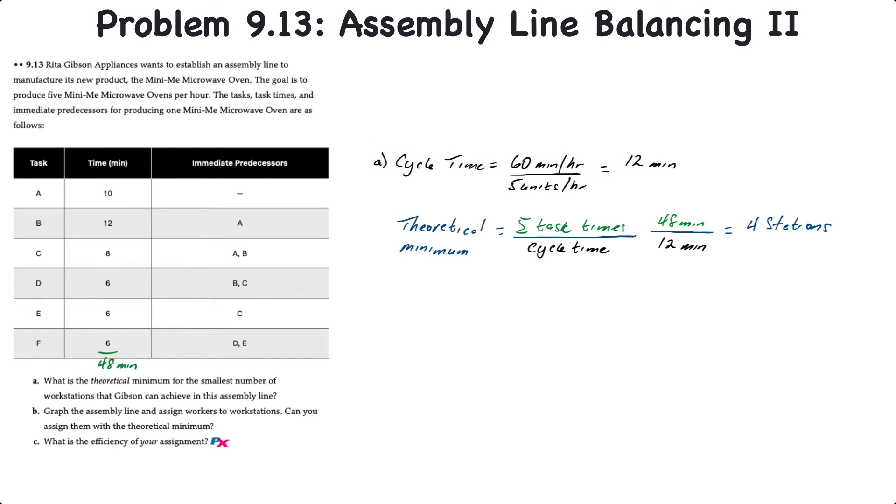Then to calculate the theoretical minimum number of workstations, we'll take the sum of the task times divided by the cycle time. The sum of the task times is 48 minutes and the cycle time we just calculated is 12 minutes, which gives us a nice round four workstations.